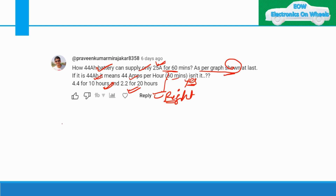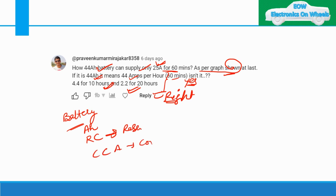There are three things to consider when selecting any battery. The first is AH (ampere hours), the second is RC which is reserve capacity, and the third is CCA which is cold cranking ampere. These are the three specifications when we select any battery. I will now show you all three graphs related to AH, RC, and CCA for a 44 AH battery.